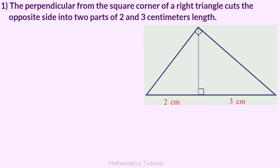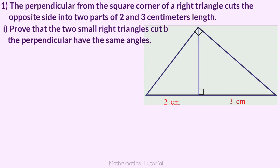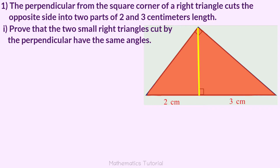The perpendicular from the square corner of a right triangle cuts the opposite side into two parts of 2 and 3 centimeters length. There is one right triangle with the right angle at the square corner, one perpendicular to the opposite side, cutting it into 2 centimeters and 3 centimeters.